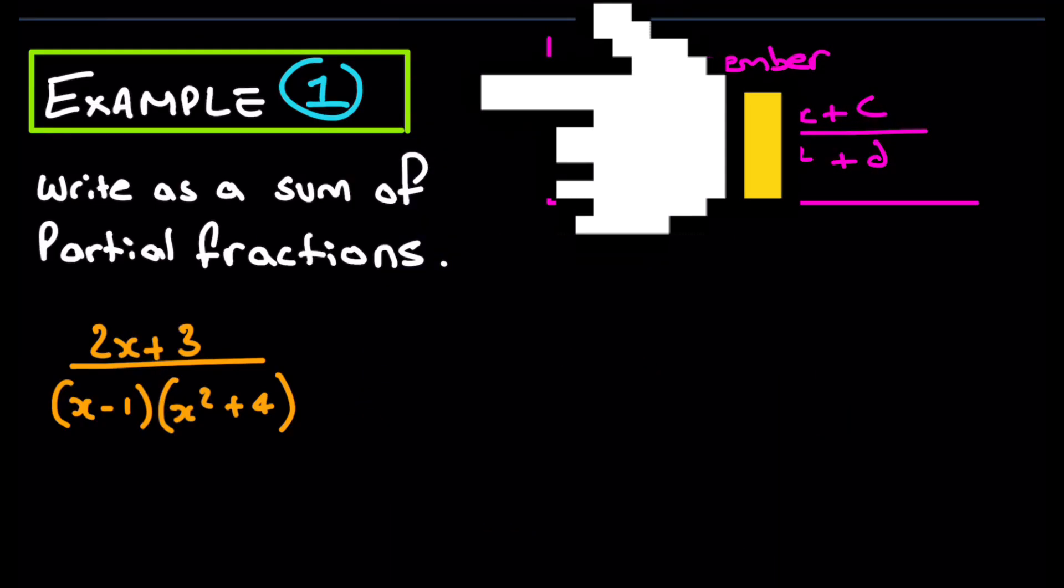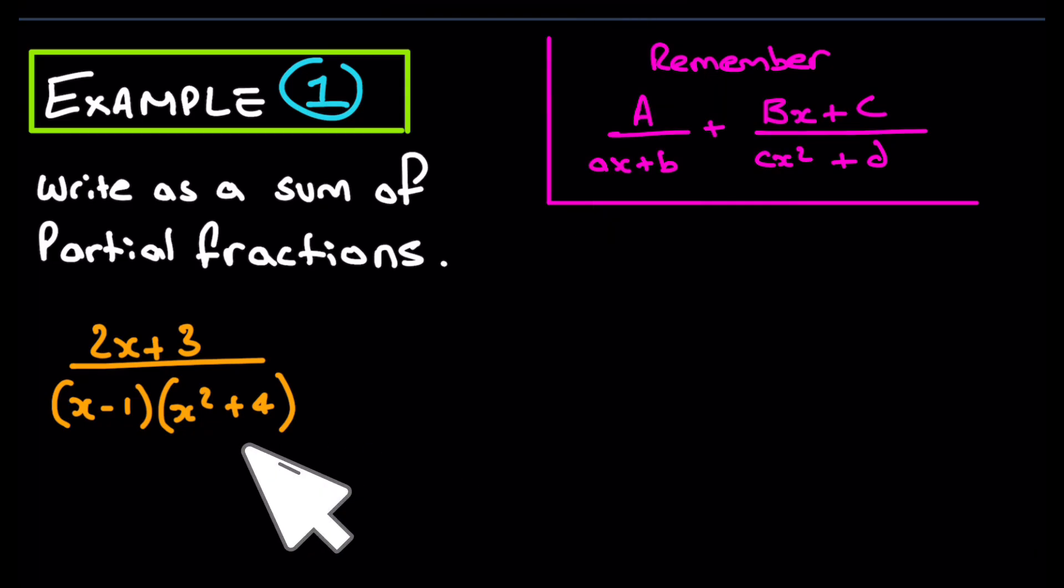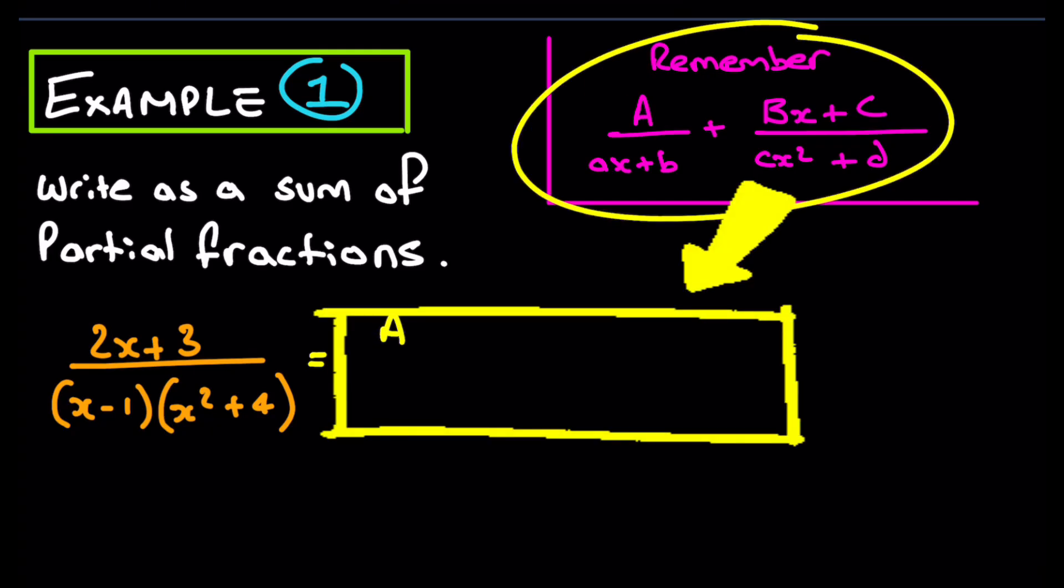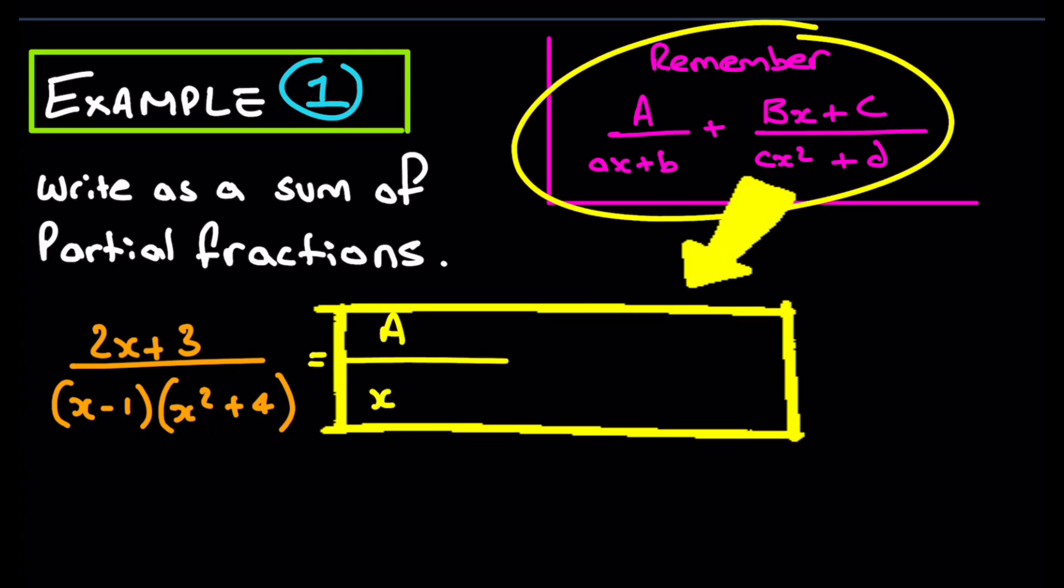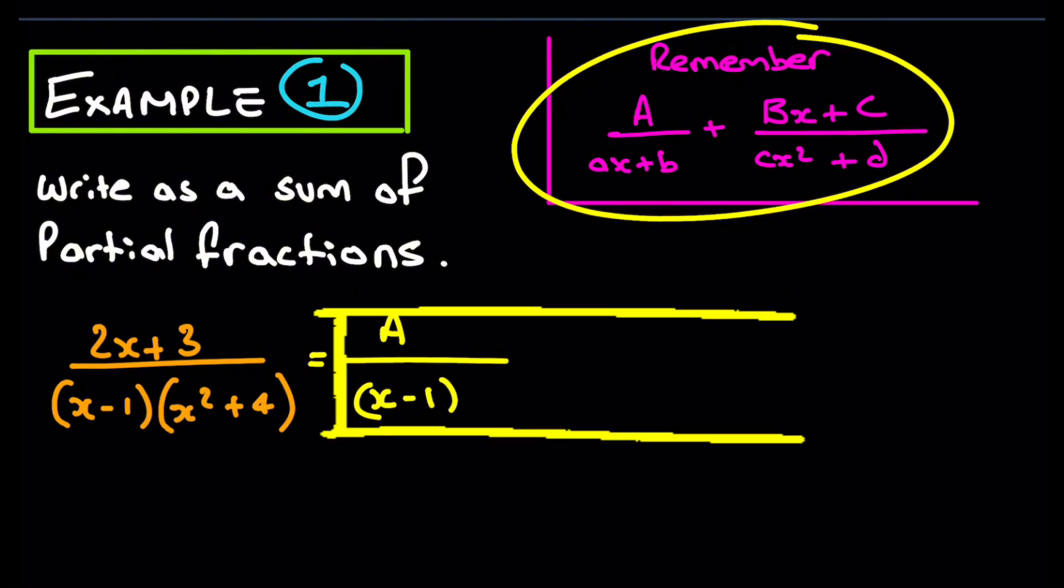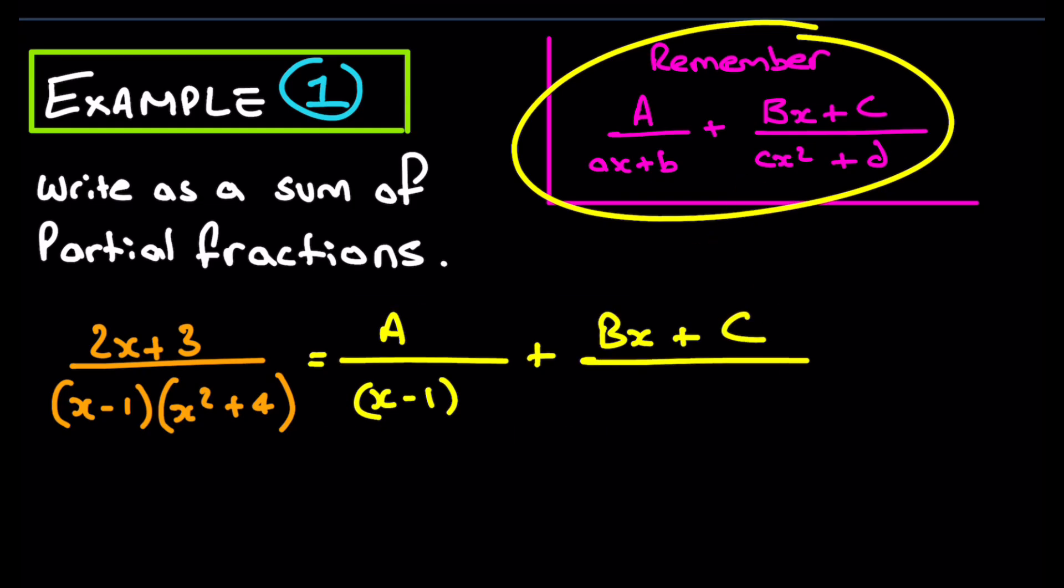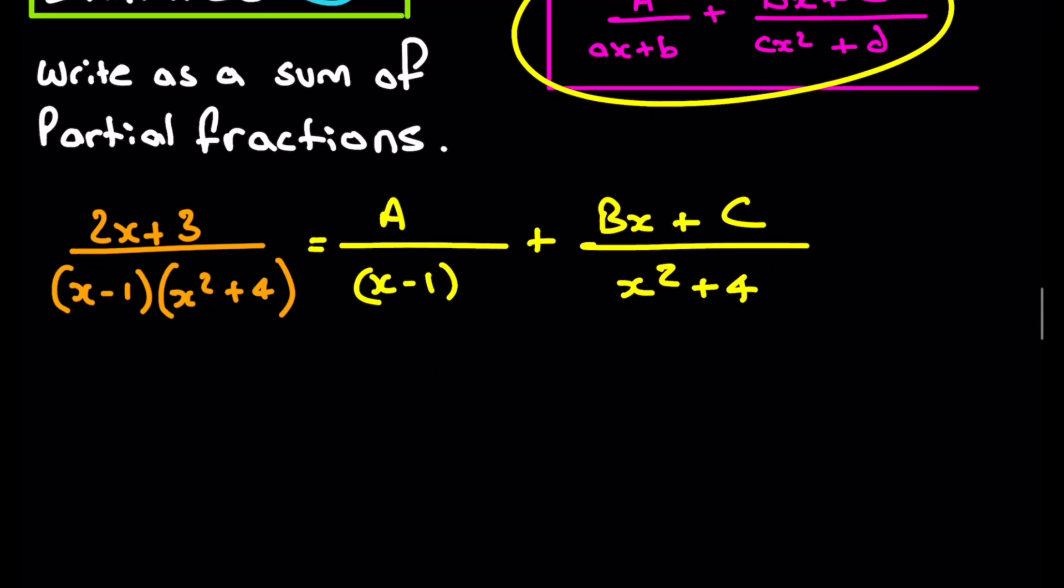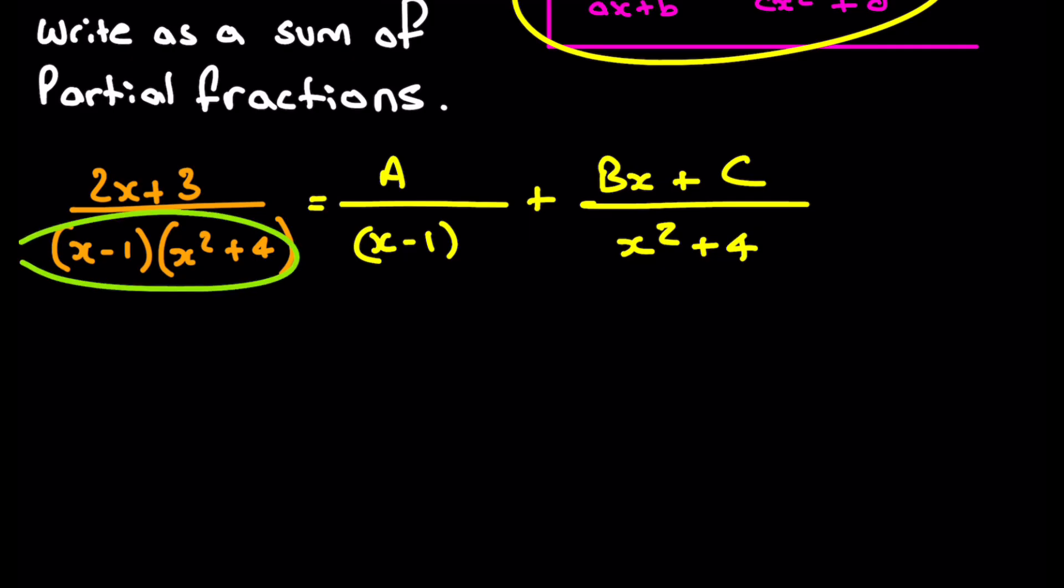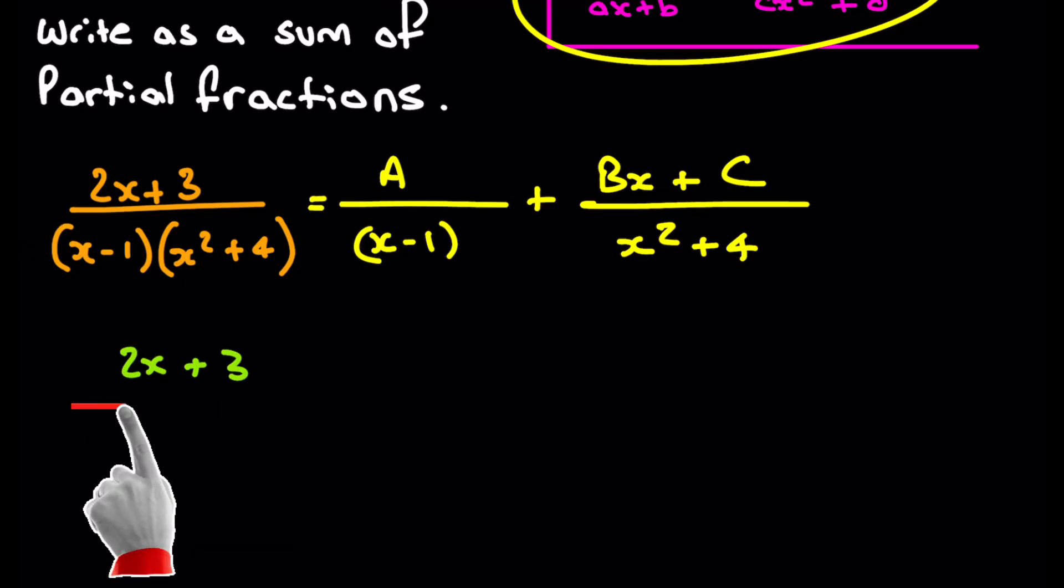Example one. Write as the sum of partial fractions. We can see that that is a quadratic on the denominator. So we're going to use this format, where we have A over, and then we have our linear factor here, which is x minus 1, plus Bx plus C, all over the quadratic factor, which is the x squared plus 4. Now what we're going to do is what we did in part 1 of this series, we are going to multiply everything through by the denominator on both sides of this equation.